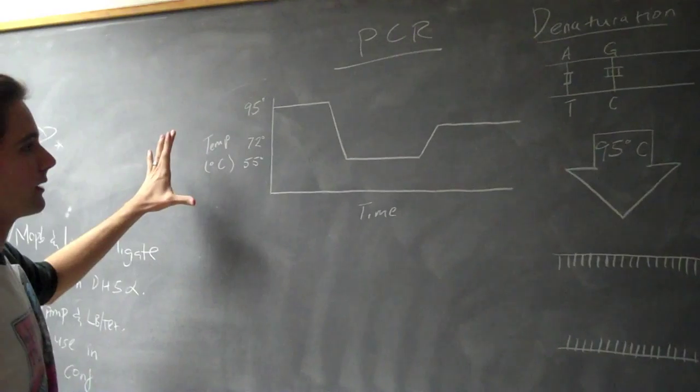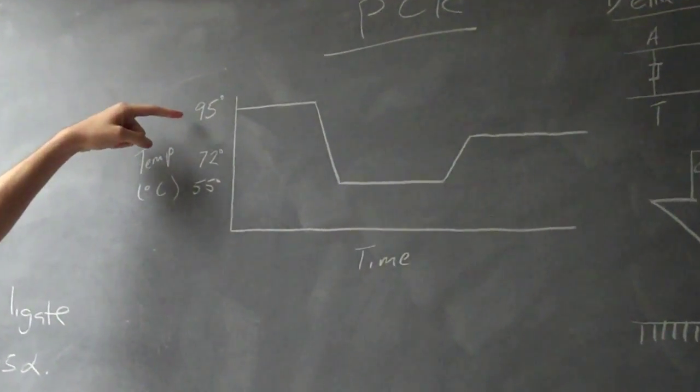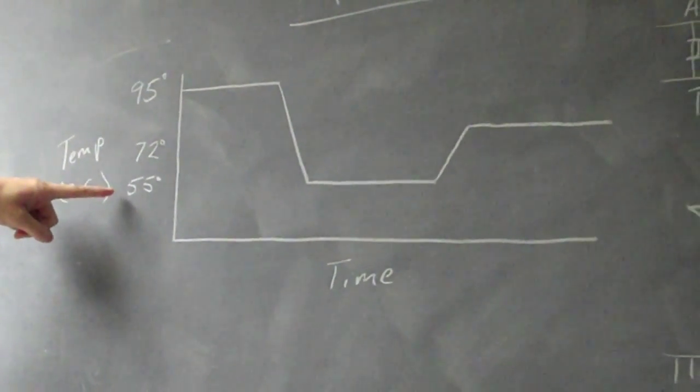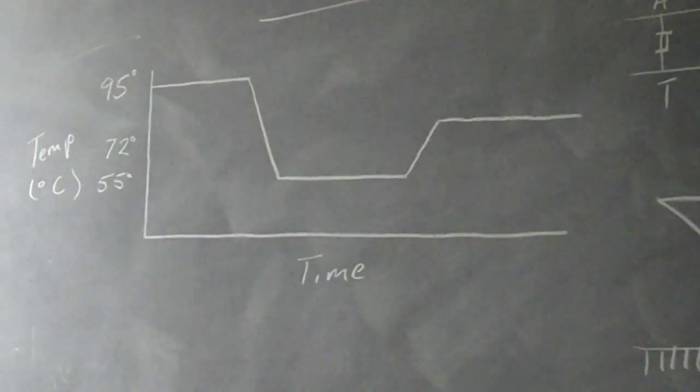In a graph, a PCR looks something like this, where you have the initial step called denaturation, the second step called annealing, and then the third and final step called extension.